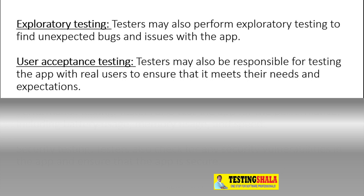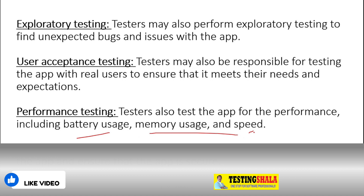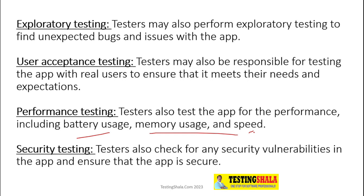The next role and responsibility is performance testing, where the mobile app tester checks for various performance factors such as battery usage, battery consumption, memory usage, and speed or response time of the given mobile application. All these aspects are covered in various scenarios and real-time situations. Security aspects will also be covered as part of the mobile app tester's responsibilities. These are some of the key important roles and responsibilities of any mobile app tester.